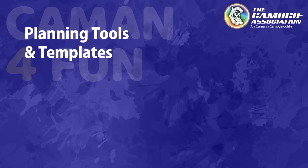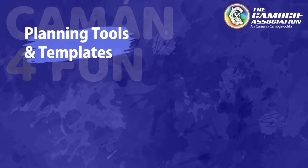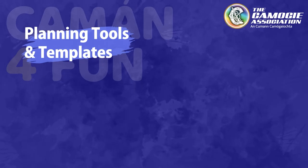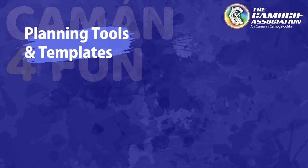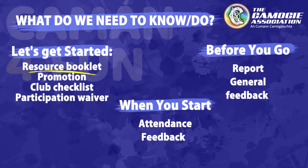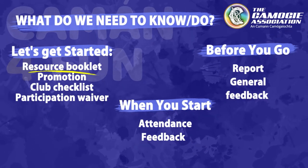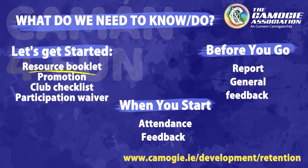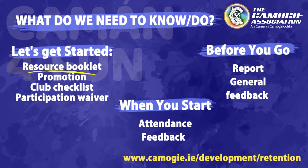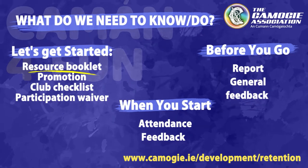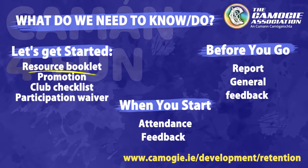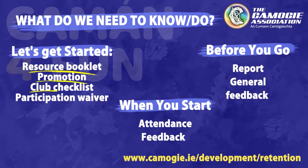Administration is something we can't get away from unfortunately. Hopefully the breakdown of the administration into smaller parts will aid the club and the league coordinator in completing these tasks. The Come On For Fun resource booklet is the go-to guide for this initiative and it is available on the Camogie website. As well as this booklet, all of the documents mentioned from here on are available online under the Come On For Fun Coordinators Pack banner. As we move through the module, you will see an example of each document.